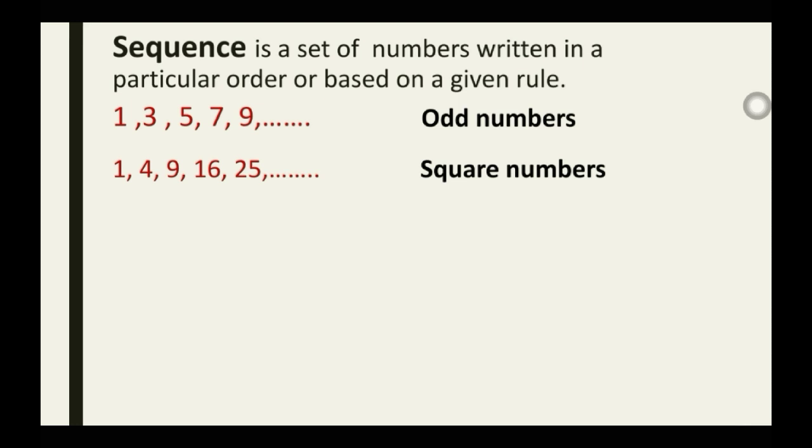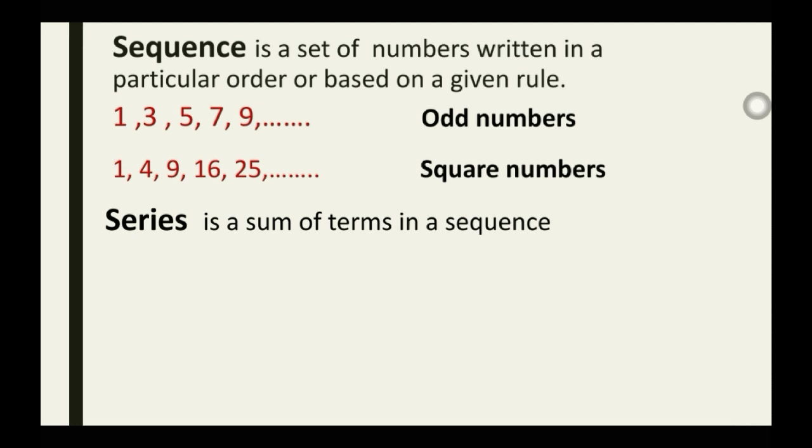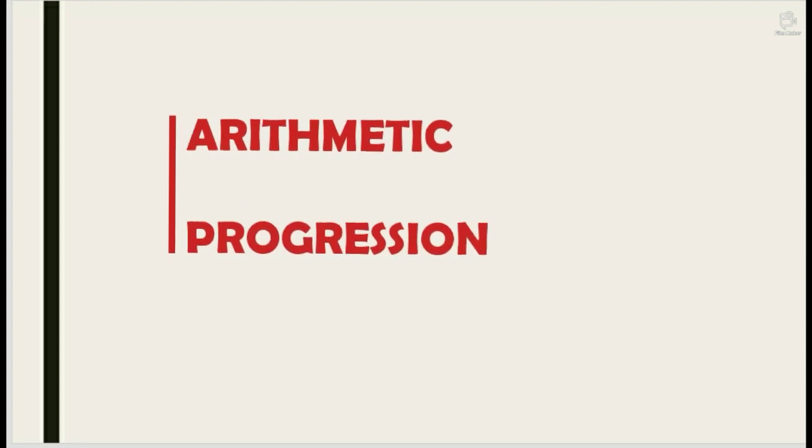A series uses the sum of things in a sequence. If I change the commas in the sequence and replace them with addition signs, I get a series. So taking my odd numbers 1, 3, 5, 7, 9 and putting addition in place of the commas gives a series. The same applies to the square numbers: 1 + 4 + 9 + 16 + 25 + ... is a series. Anytime you see addition between numbers that follow a particular order, it is a series.